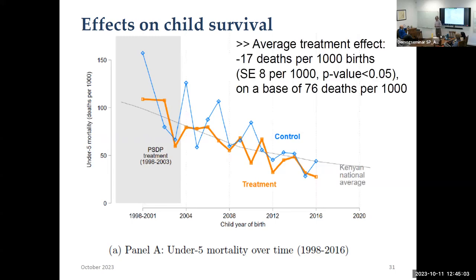When we regress child mortality on the treatment indicator and school-level covariates, we find a reduction of 17 deaths per thousand births on a base of 76 deaths per thousand over this time period. Audience clarification: These are the effects of getting phased into the program two to three years before the control. For kids in older grades, very often they graduated before their school got phased in, so for some it's the difference between three and zero years, or for younger grades five versus two years of deworming, or six versus three. It's about two to three additional years of deworming in childhood. Most policymakers have looked at this and said, because the control group eventually gets phased in, these are reasonable lower bounds on the effects of five or six years versus zero.